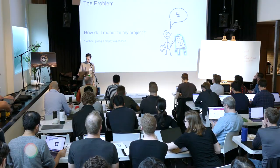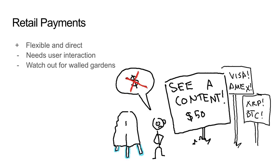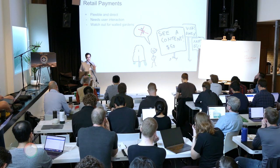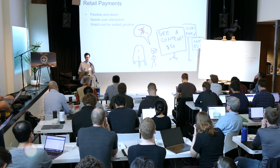So how do I monetize my project without giving a crappy experience? That's the crux of it. The types of monetization that you could do today — the first one that might be obvious is retail style payments. I have my content, I put it online and I say, if you go through this checkout flow and pay for it, you can look at it. The problem is that it's kind of a headache for the user — it takes a lot of user interaction.